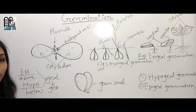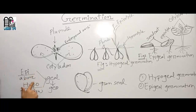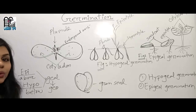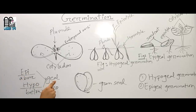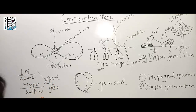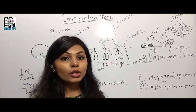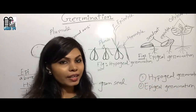To help remember the difference: 'epi' means above and 'hypo' means below, and 'geo' means soil. So epigeal means above the soil and hypogeal means below the soil — that makes it easy to remember.